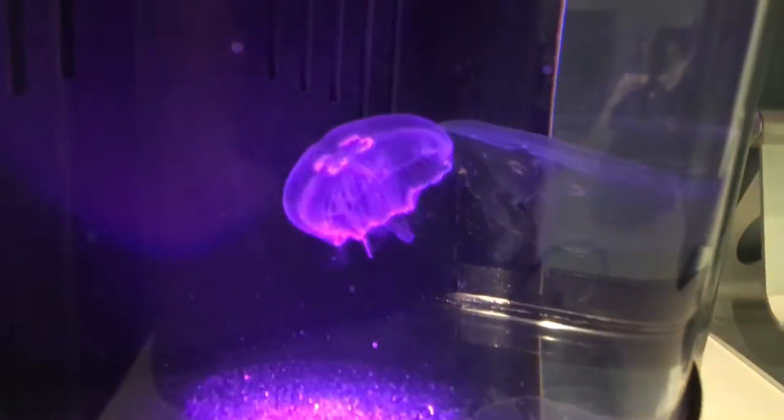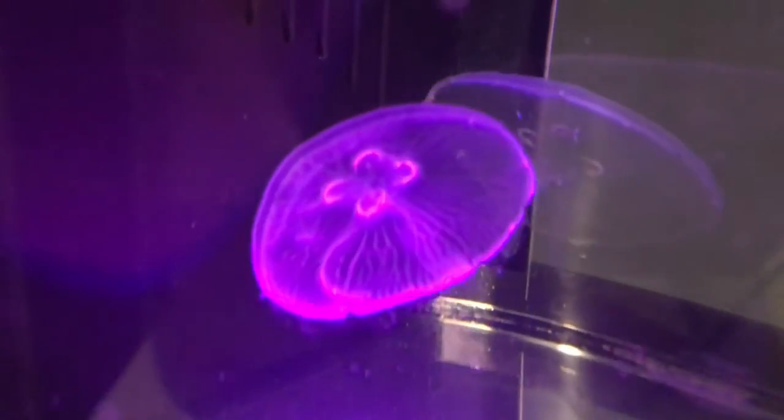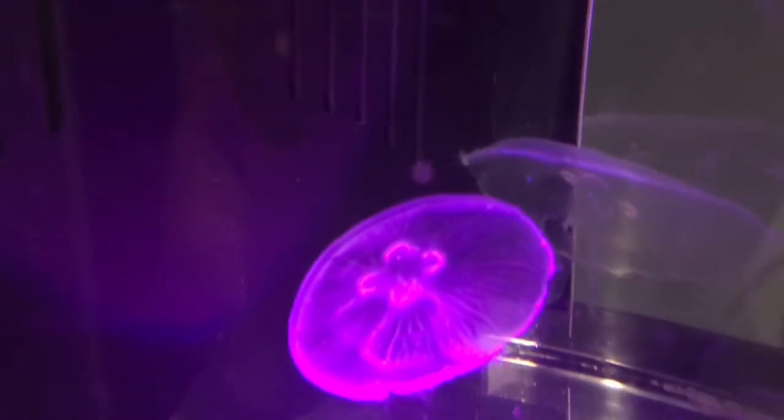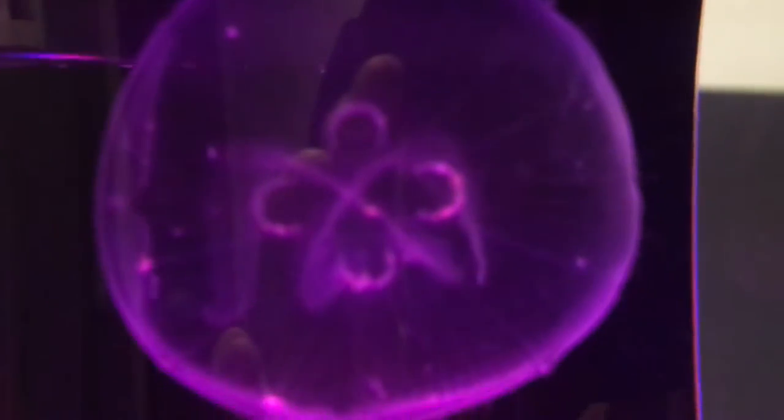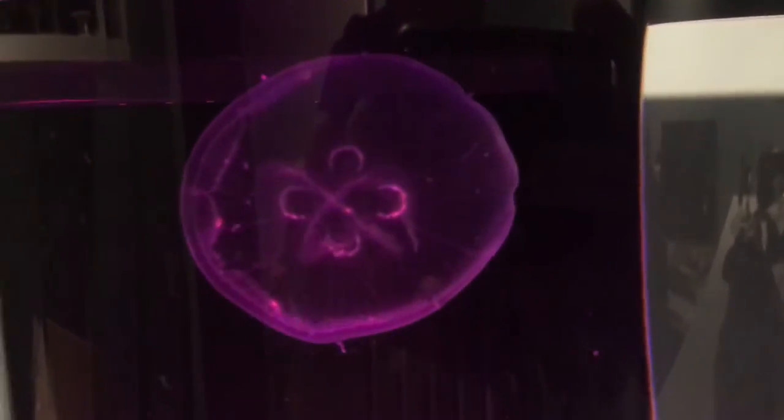I just put in some copepods and rotifers not too long ago, so you can see their bellies are actually full right now, or at least there's some food in them. See those little horseshoe shapes and you can see a bit of orange around the rim, so that would be the food that they've eaten.